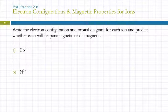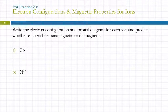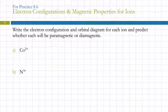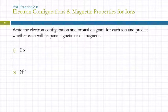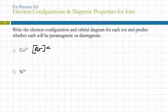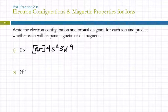Let's write the electron configuration and orbital diagram for each ion and predict whether each will be paramagnetic or diamagnetic. Cobalt 2+ — cobalt is in period 4. We only need to look at the electrons past the noble gas. The electron configuration is [Ar] 4s² 3d⁷, giving 9 valence electrons.